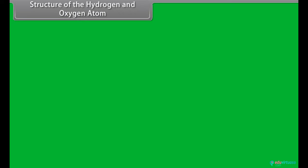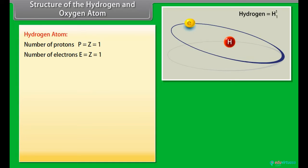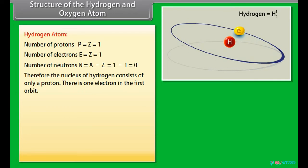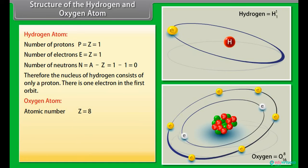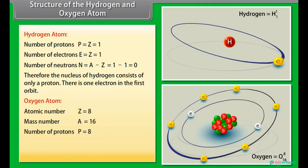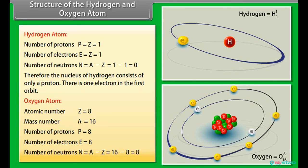Structure of the hydrogen and oxygen atom: The nucleus of hydrogen consists of only a proton; there is one electron in the first orbit. For the oxygen atom: atomic number Z = 8, mass number A = 16, number of protons = 8, number of electrons = 8, and number of neutrons = A − Z = 16 − 8 = 8.